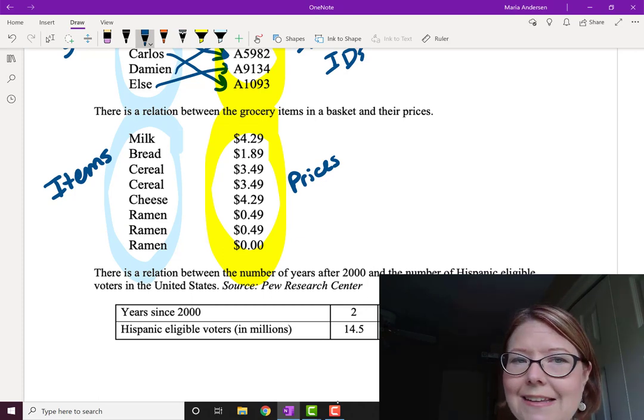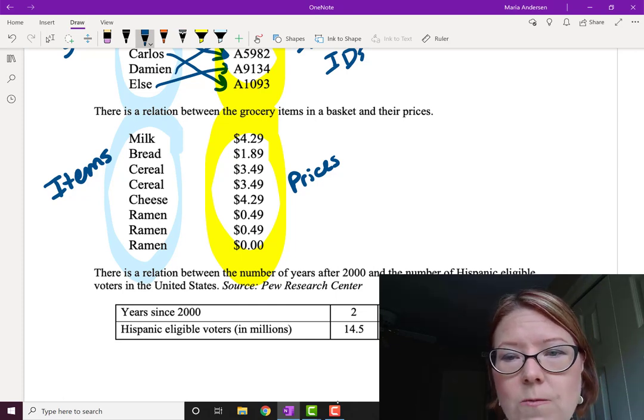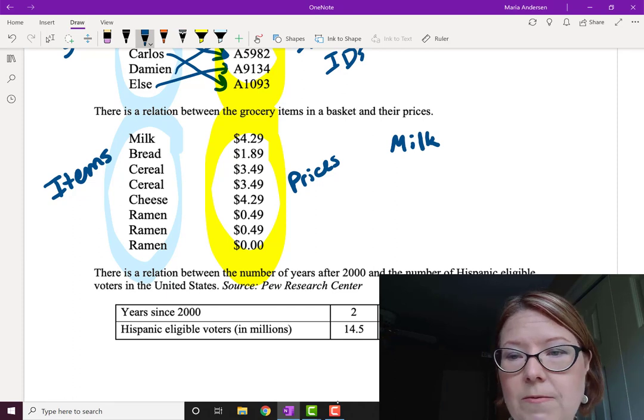We could make a slightly more compact version of this by listing each item just once with its price. So for example, we could write that milk rings up for $4.29, and bread for $1.89.